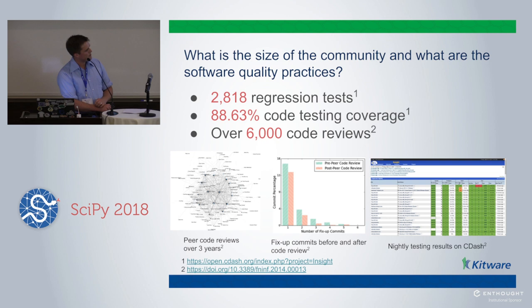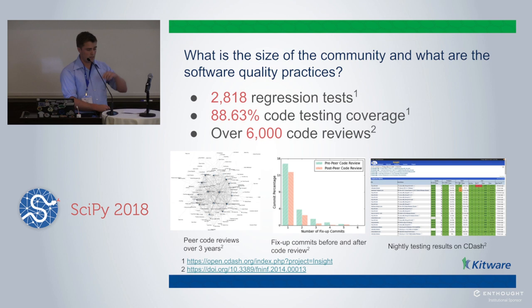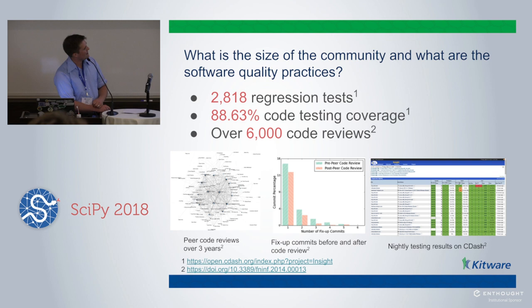There's also an interesting graph: with so many commits you can actually quantify and see an experiment where on the x-axis is the number of fix-up commits — somebody commits something and then comes back within a few days and changes it again because they had a fix. After we started doing code review with Git, that can actually be seen to decrease. This is made to be used by researchers in commercial applications and for people who are teaching, so it has to work really well. There's a lot of software quality engineering: nightly testing, 2,800 regression tests, 88.63% code coverage — when you have that much code, you count the hundredths digit.